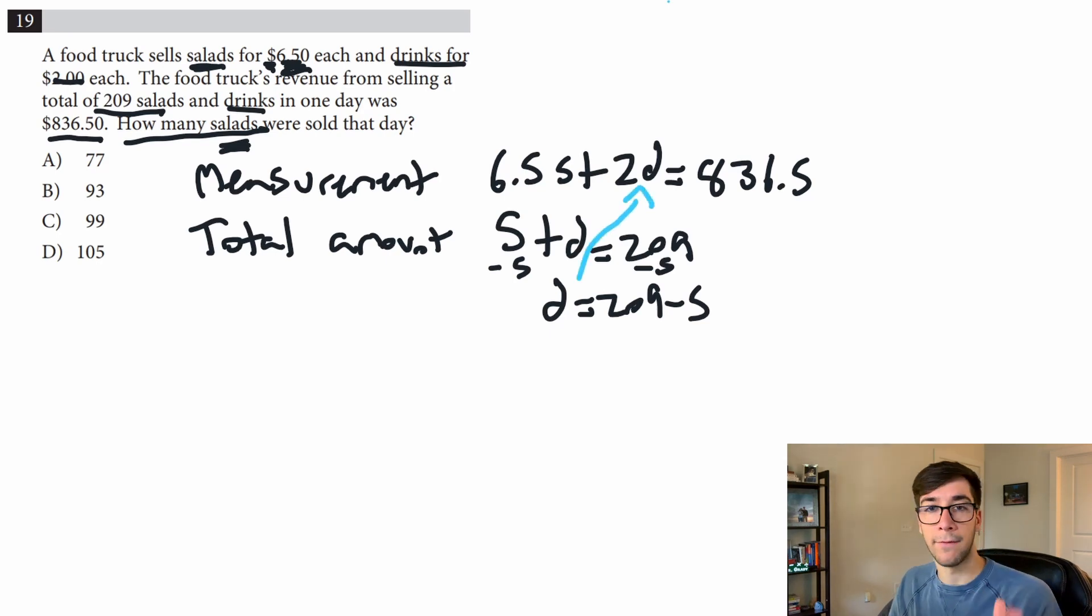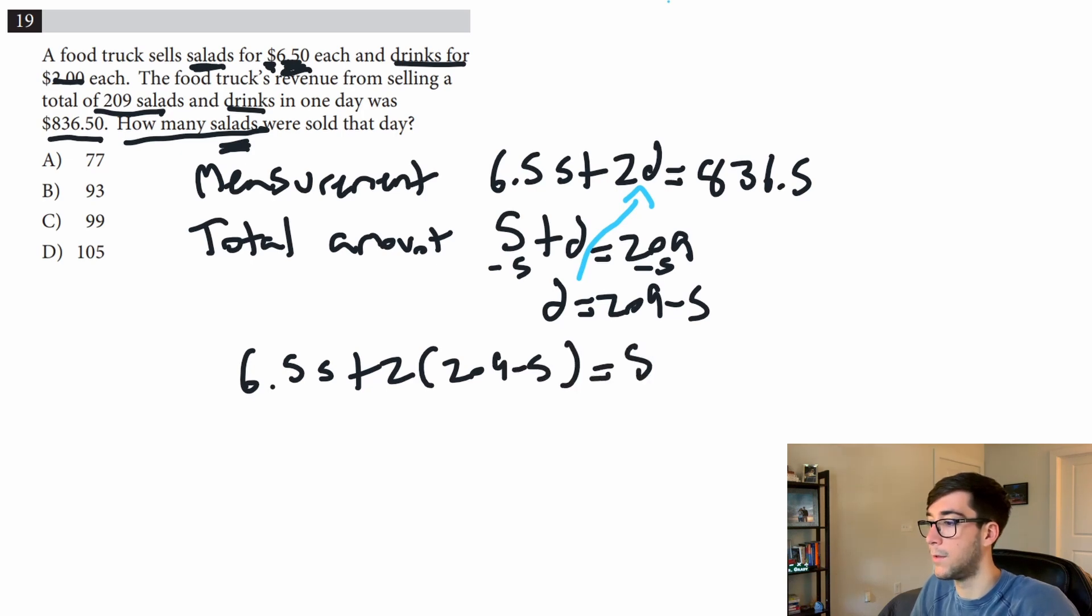We'll only have s's, so we're solving for salads. We'll have 6.5s + 2, and not 2d, it's going to be 209 - s, because we're substituting that in, equals 836.5. And now we solve the equation.